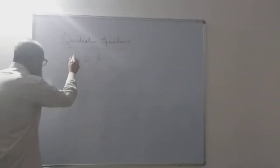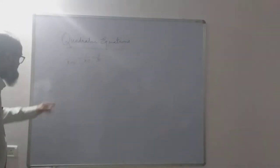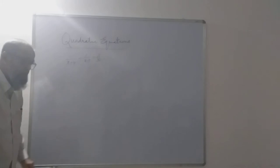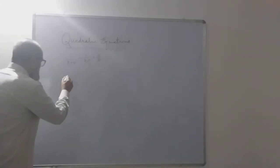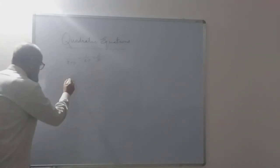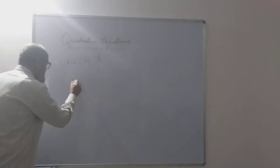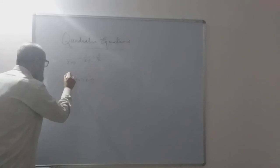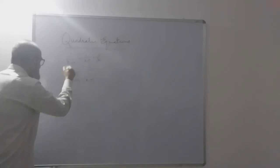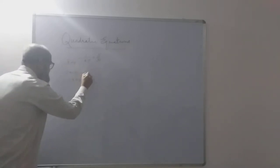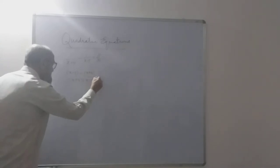Here, we have to bring it first into the standard form. This is a fraction, this is a fraction, and there is a negative sign between them - one fraction is being subtracted from the other. When we are adding or subtracting two fractions, we have to take the LCM. The LCM is (x plus 4) into (x minus 7).